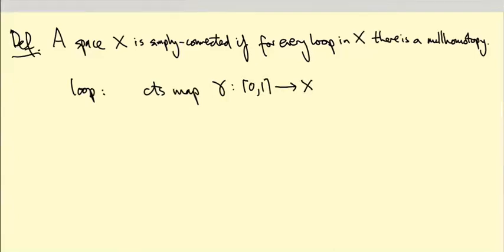At time zero, it moves around gamma(t), until at time one it gets back to where it started. So gamma(0) equals gamma(1), and it should be a continuous map.